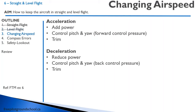Often while we're in straight and level flight, we might want to change our airspeed. To accelerate, we're going to add power and control our pitch and yaw. The aircraft will tend to pitch up when we have more power, which means we have to apply forward control pressure. Then we trim the aircraft using the trim wheel to eliminate any pressure on the controls.